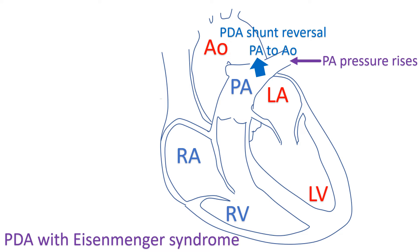After some time, this mechanism fails and there is disproportionate pulmonary hypertension, which is known as reactive pulmonary hypertension. When the pressure in the pulmonary artery rises above that in the aorta,